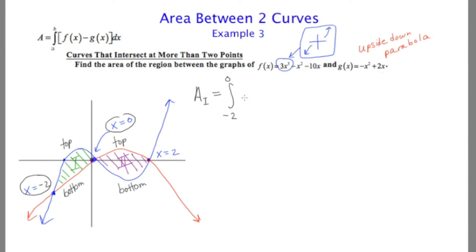Because it starts here at -2 and it ends here at 0. And it's going to be the top curve minus the bottom curve. The top curve is the blue curve, or 3x³ - x² - 10x. Minus the bottom curve, which is the red curve.